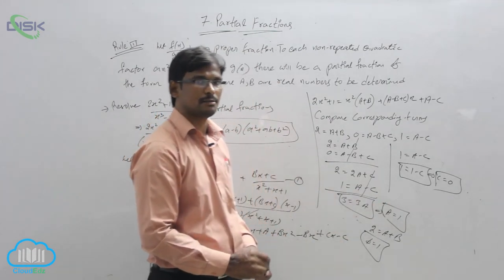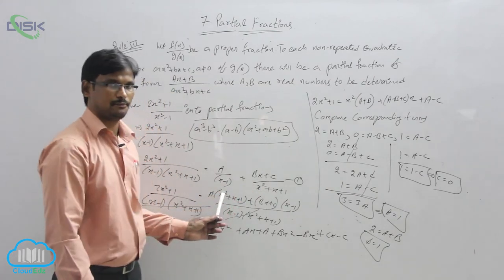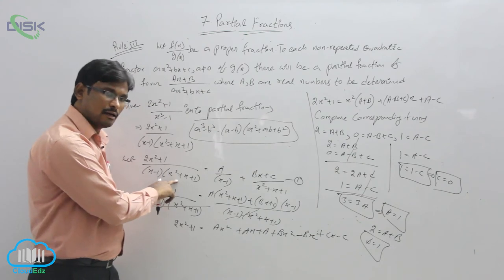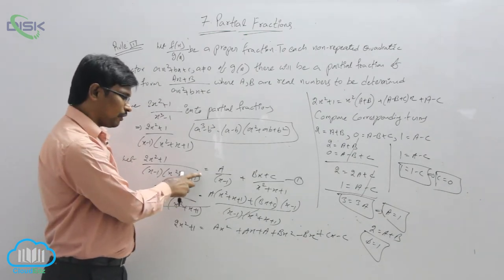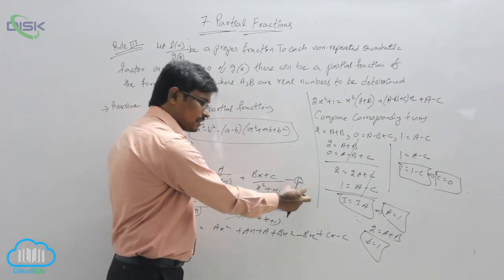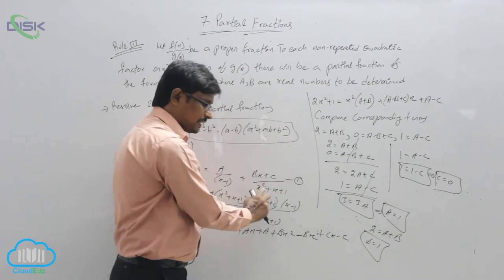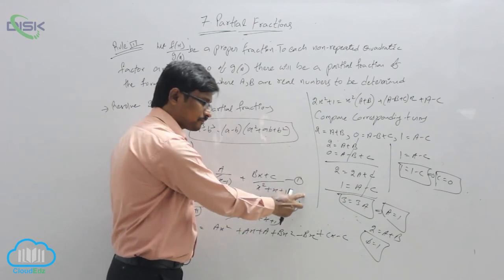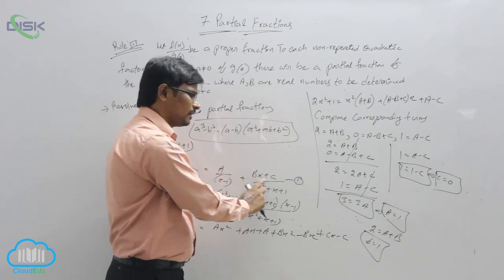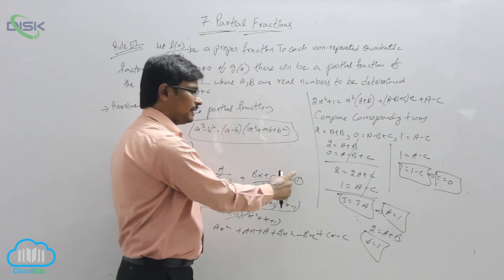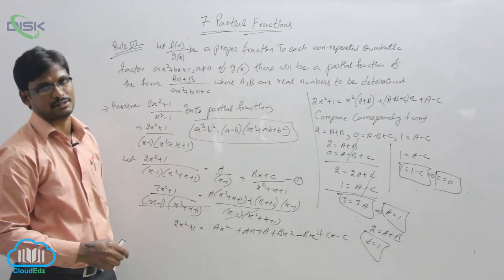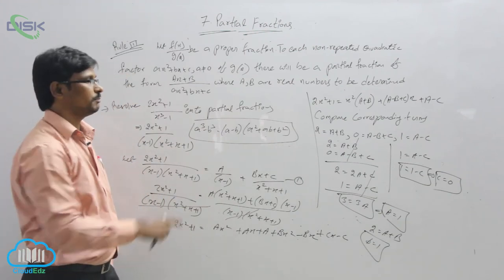Now substitute these A, B, C values back into equation number 1. This is the method when the denominator has x² to whole power 1. Suppose if it were whole power 2, we would need to write an additional term: (Dx + E)/(x² + x + 1)². This is Rule 3 in partial fractions for proper fractions.